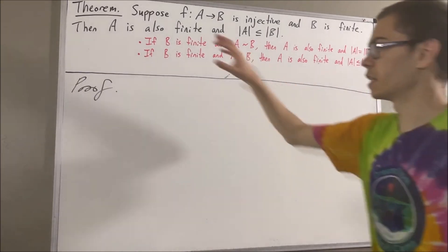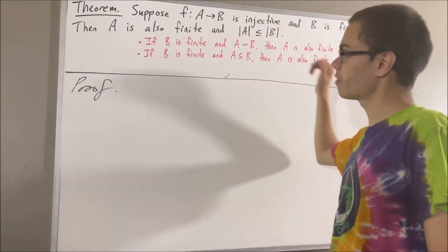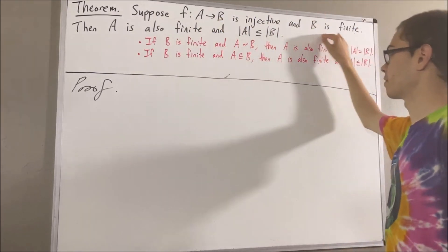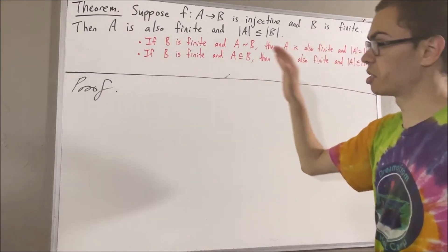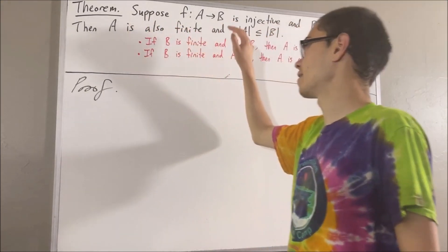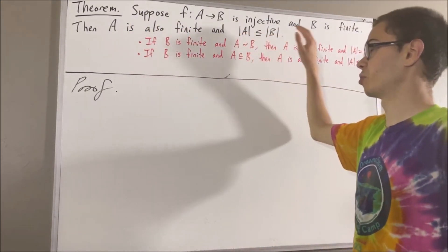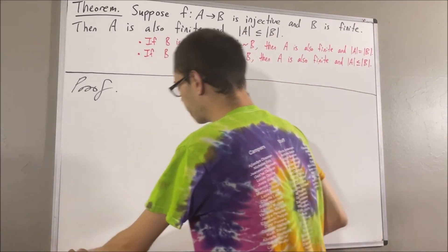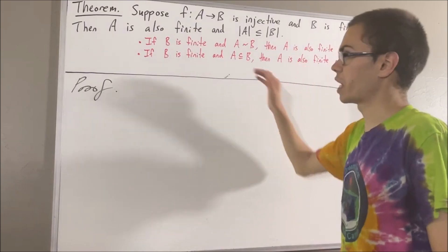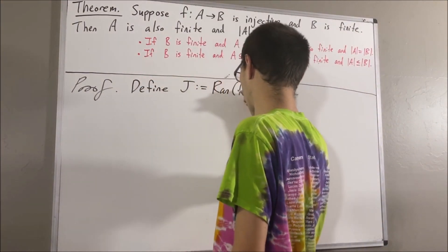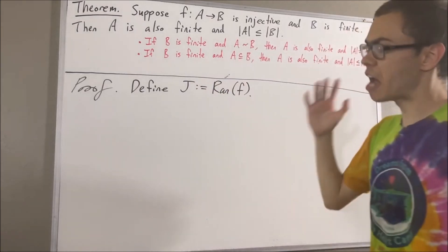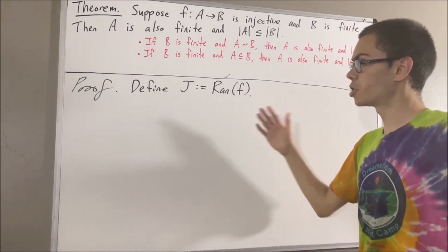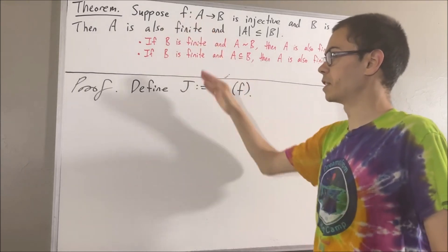So now let's get into proving this theorem. We're given that F is an injective function from A to B, and we're given that B is finite. The goal is to prove that A is also finite and that the number of elements in A is less than or equal to the number of elements in B. To start the proof, let's define J to be the range of F. Every function is surjective to its range, so F is surjective to J.